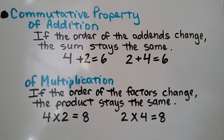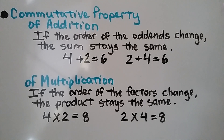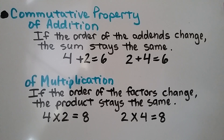The commutative property of addition says if the order of the addends change, the sum stays the same. So 4 plus 2 are addends — it's equal to 6. We can change the order of the addends to 2 plus 4 and it still equals 6.